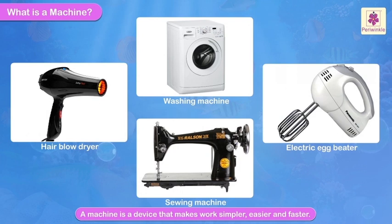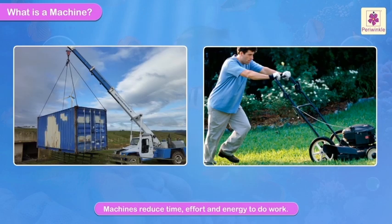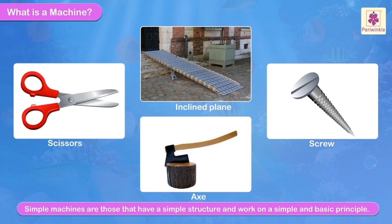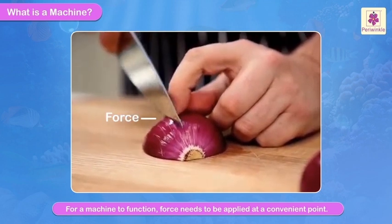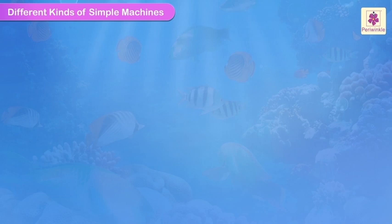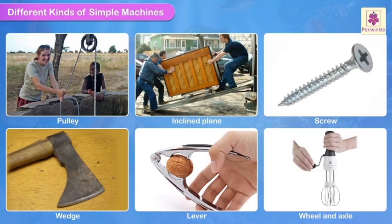What is a machine? A machine is a device that makes work simpler, easier and faster. Machines reduce time, effort and energy to do work. Simple machines are those that have a simple structure and work on a simple and basic principle. For a machine to function, force needs to be applied at a convenient point. There are six kinds of simple machines used by us in our daily lives: the pulley, the inclined plane, the screw, the wedge, the lever, and the wheel and axle.